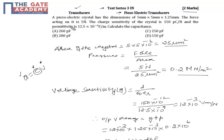The force is given as 5N, and the area is calculated from the given dimensions: 5×5 mm, giving an area of 25 mm². So the applied pressure comes out as 0.2 MN/m². The voltage sensitivity is then the charge sensitivity divided by the permittivity of the medium.